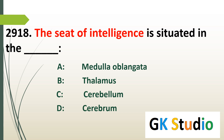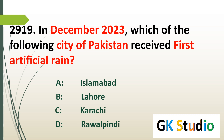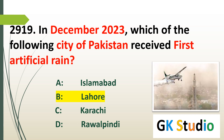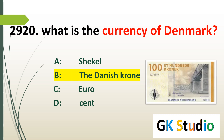The seat of intelligence is situated in the cerebral part of the brain. In December 2023, which city of Pakistan received its first artificial rain? Lahore. What is the currency of Denmark? The Danish crown is the currency of Denmark.